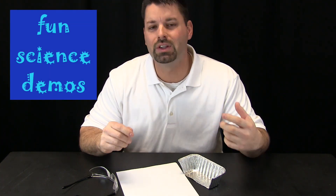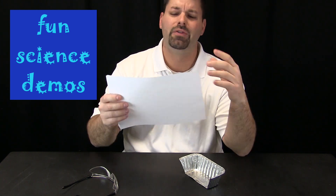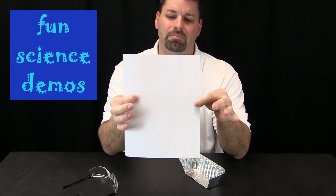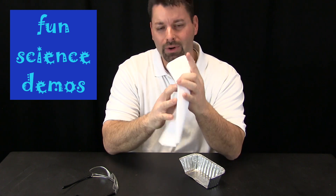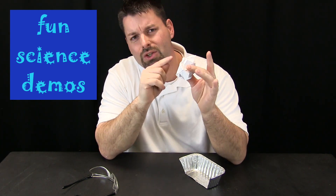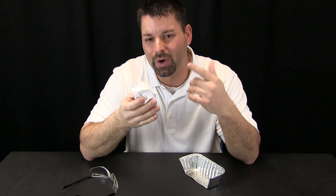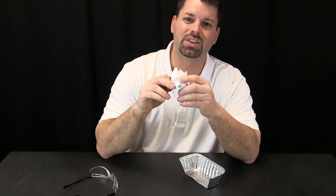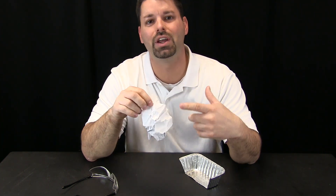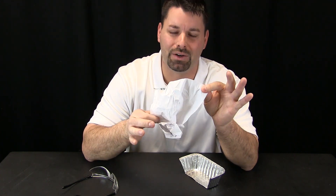In a previous video we talked about physical changes. A physical change is where I can change what something looks like. A piece of paper, I crumble it into a ball, I have changed what it looks like. I do not change what it is made of, I do not change the matter that this paper is made of.